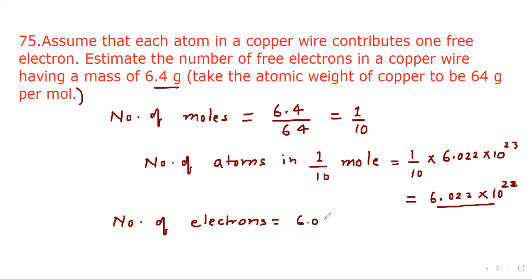Since each copper atom contributes one electron, number of electrons will be 6.022 into 10 to the power 22. If we write its approximation, then it will be 6 into 10 to the power 22. Thank you for watching.